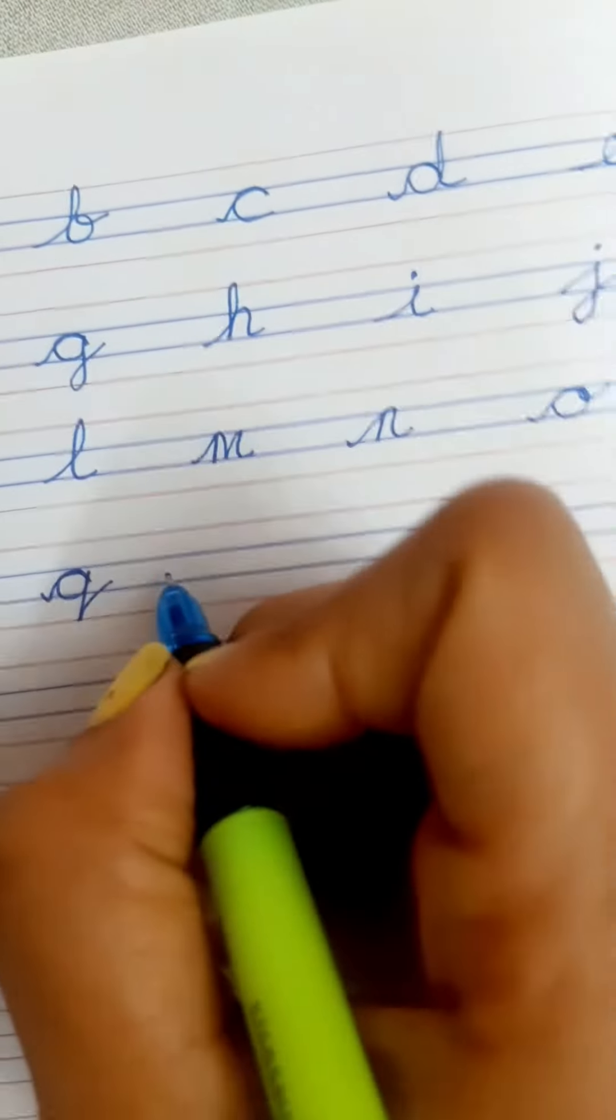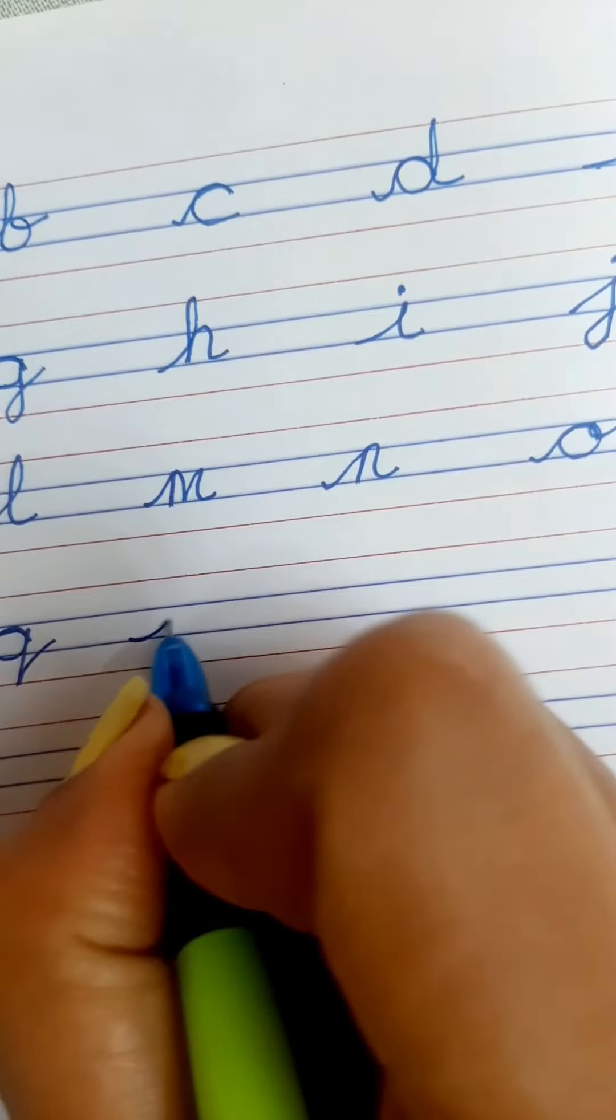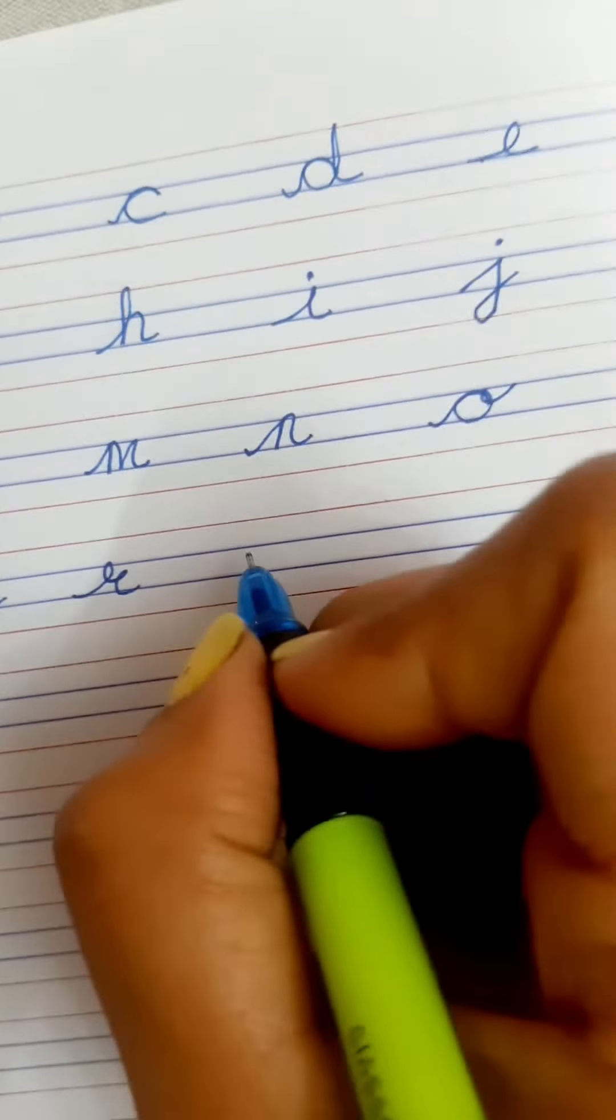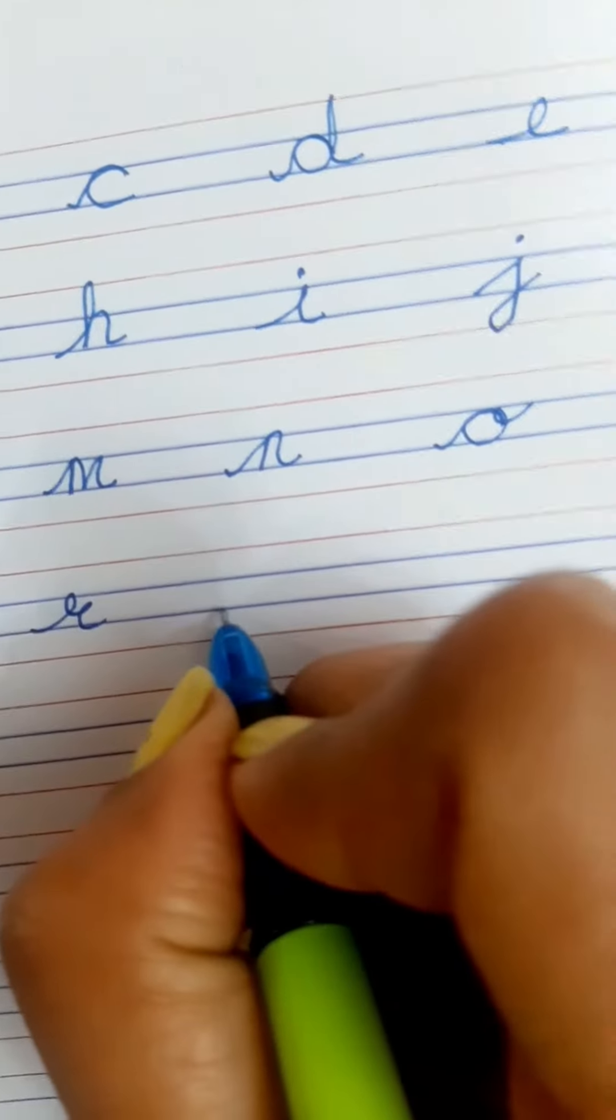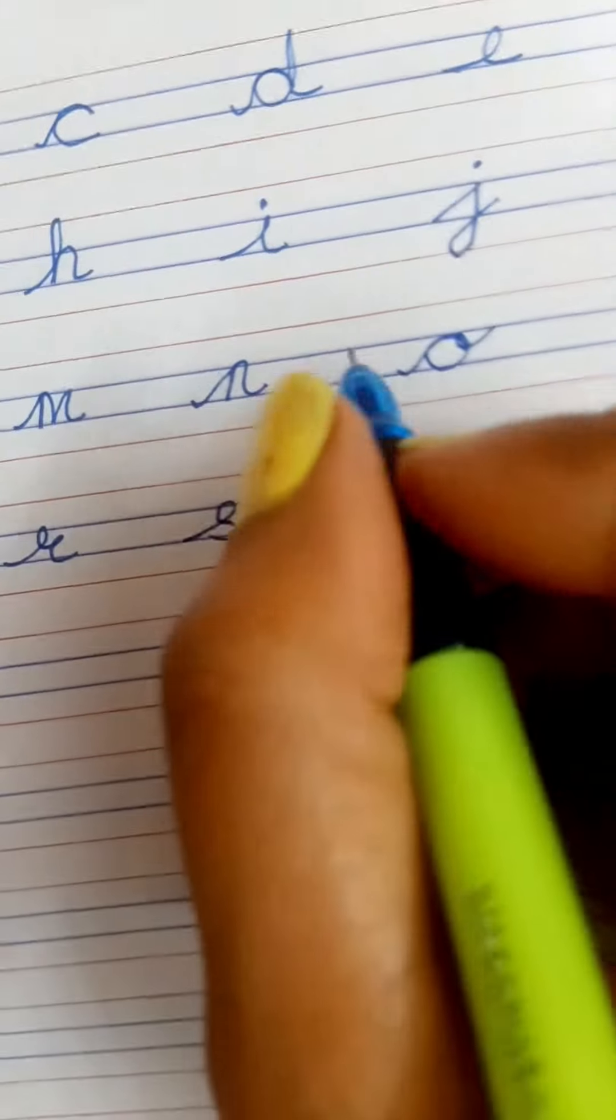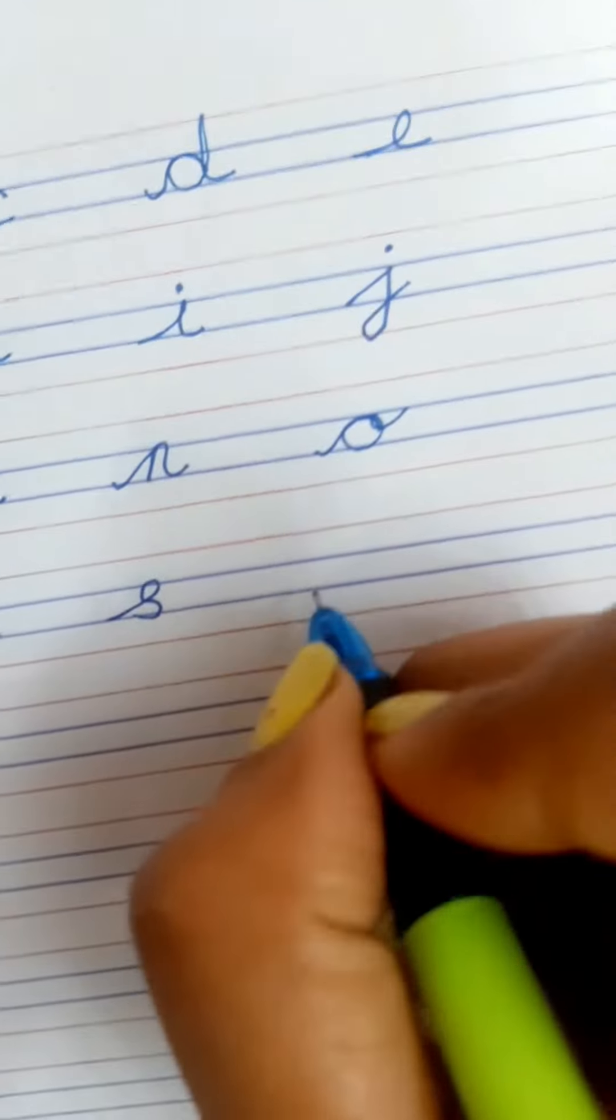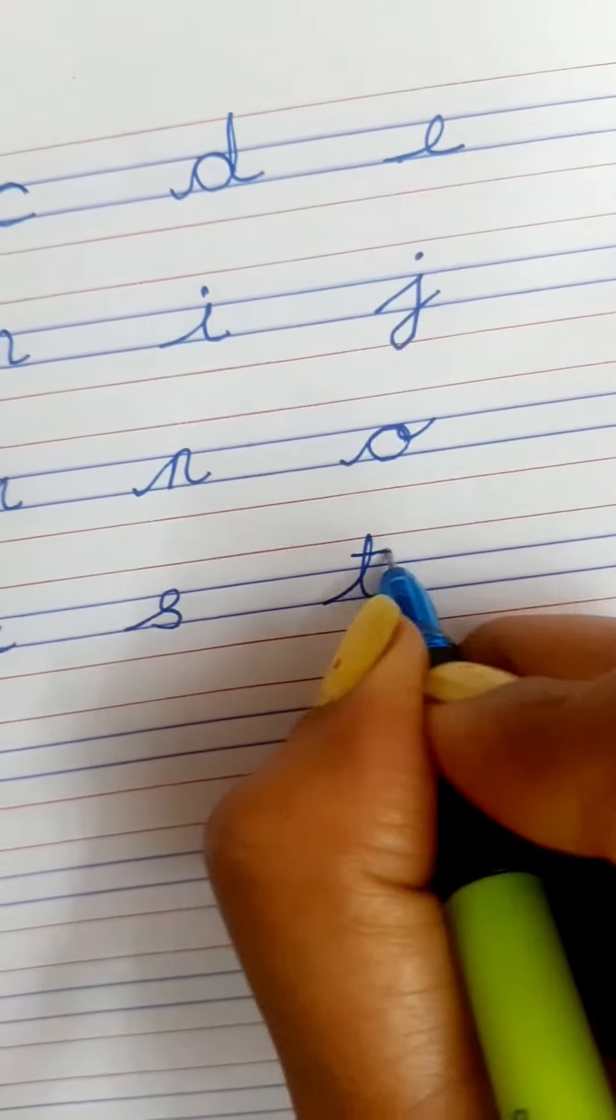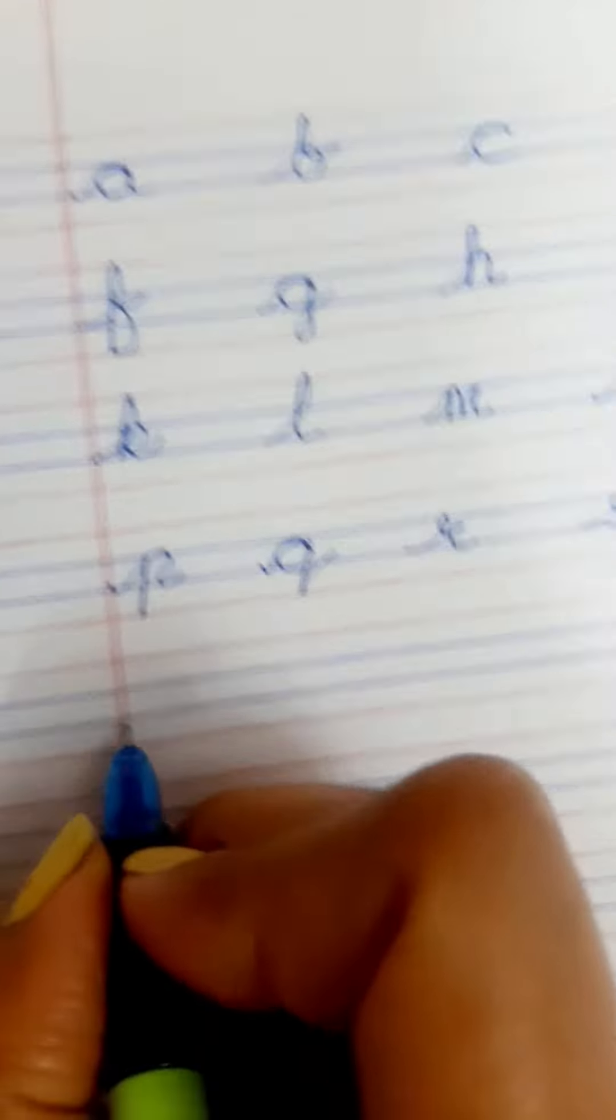Just try it. Already they have developed their grip from writing small letters, so small letter cursive is very easy. Capital is a little difficult, yes, but they will learn that too. Trust me, with this method they are going to write in two days.